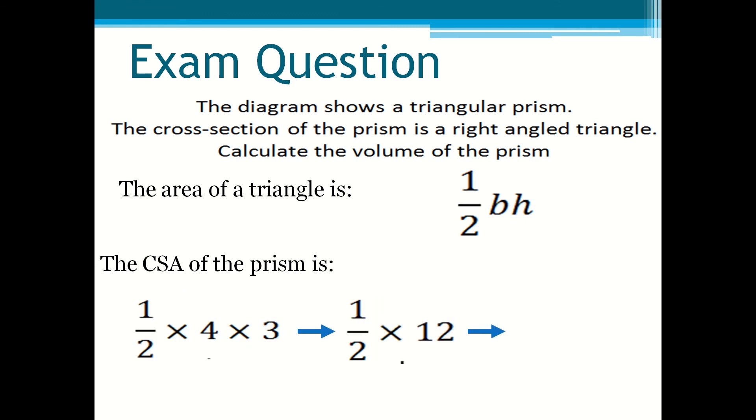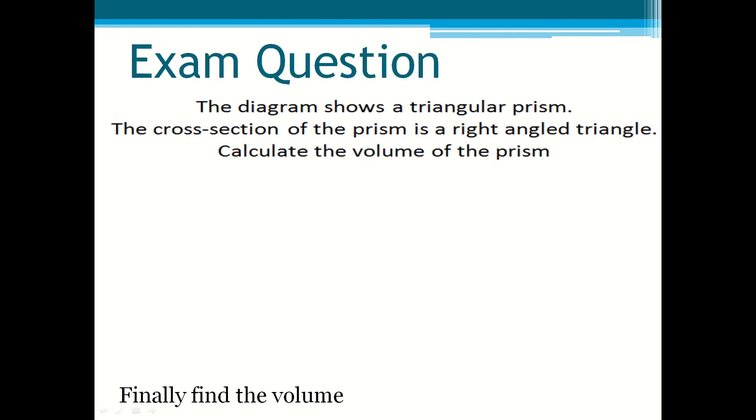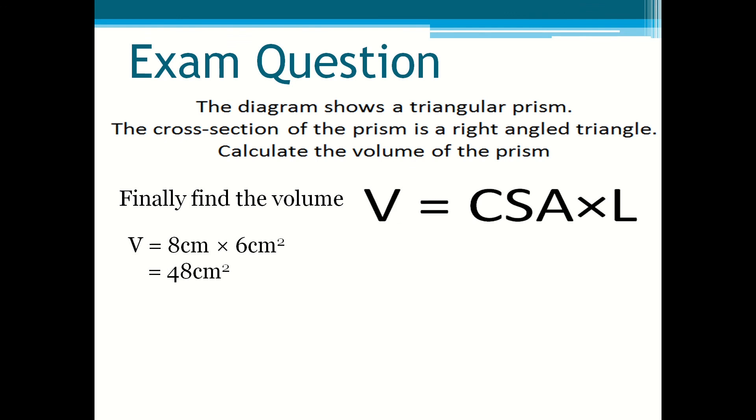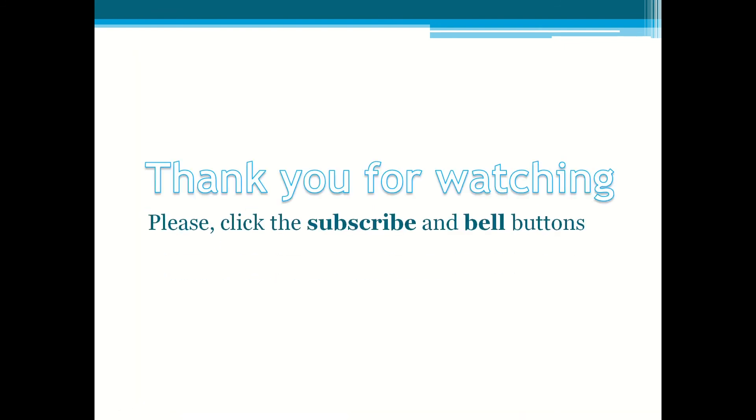Then to find the volume you multiply six centimeters squared by eight which is the length to get 48 centimeters cubed. Therefore the volume of this prism is 48 centimeters cubed.